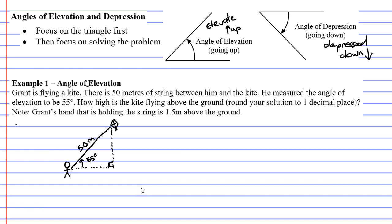Let's try and focus more on the question. It says how high is the kite flying above the ground, so we're really trying to find the vertical height. We're going to put an x there. There's some more details—it's asking to round your solution to one decimal place; we'll worry about that at the end.